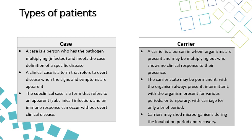The second type of patient is the carrier. A carrier is a person in whom organisms are present and may be multiplying, but who shows no clinical signs. Carriers may shed microorganisms during the incubation period and recovery.